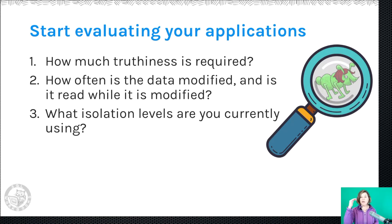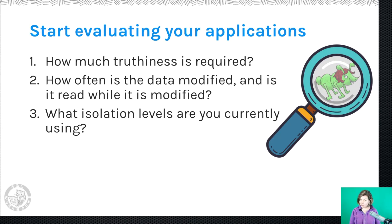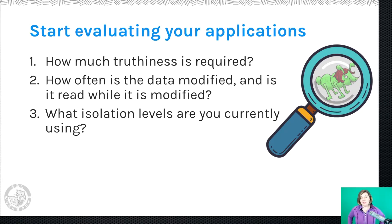You also want to know when data is modified and whether it's being read while it's modified. Some applications only have modifications done in a window when nobody's reading the data — those are fewer and fewer now that people access websites 24 hours a day, but they do still exist. All the problems shown here involve data being modified while it's being read, so some apps you can rule out. And then research what isolation levels you're currently using — this can take some digging because there may be a lot of NOLOCK hints in there.